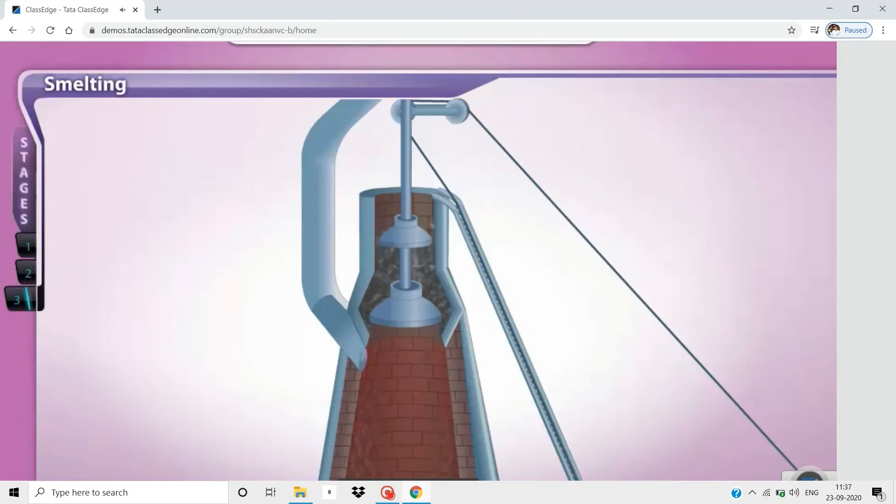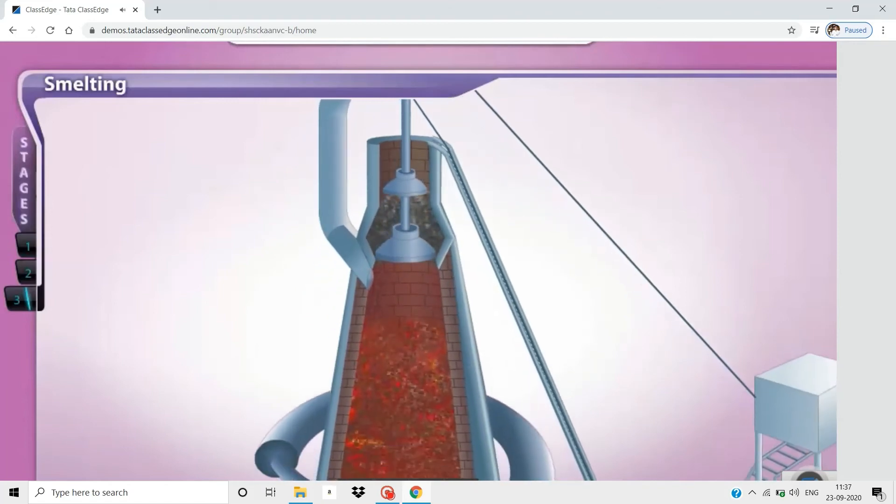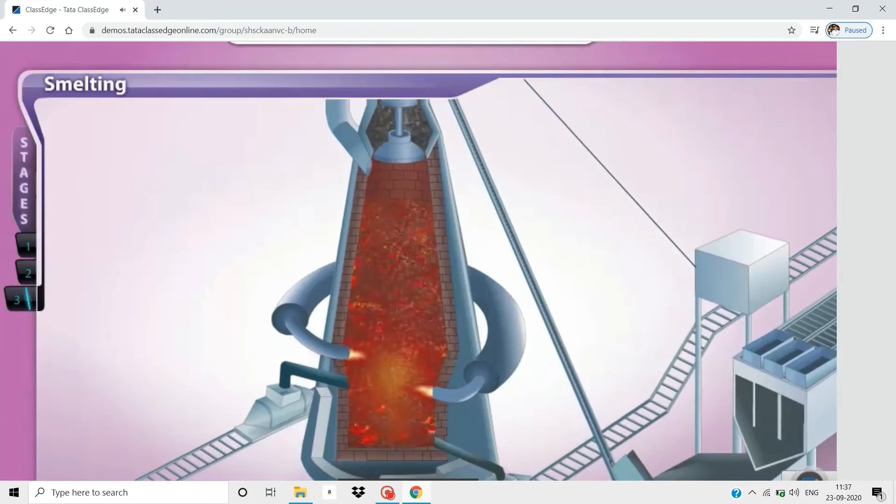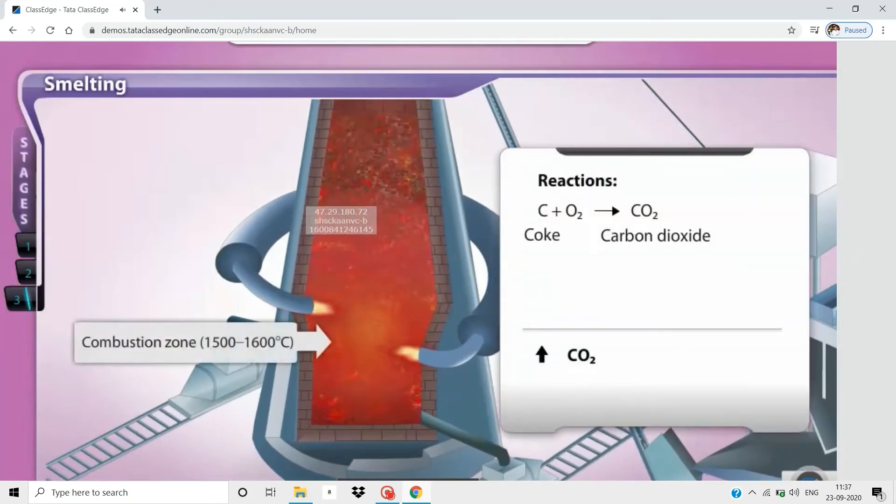A preheated blast of air is sent into the furnace from the bottom. This air is at a high pressure and at an extremely high temperature of 1500 degrees Celsius. At this temperature, coke, which acts as a fuel, burns and produces carbon dioxide in the combustion zone.